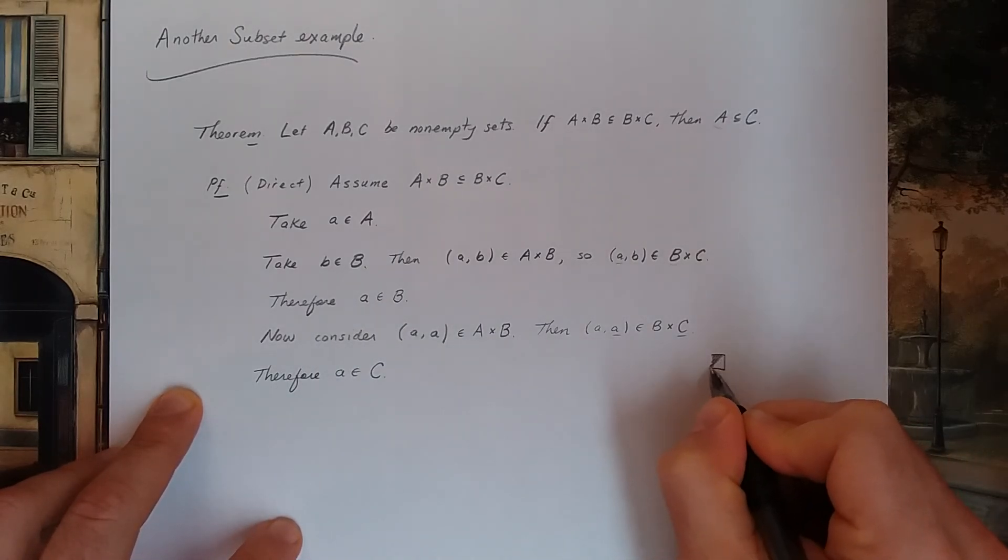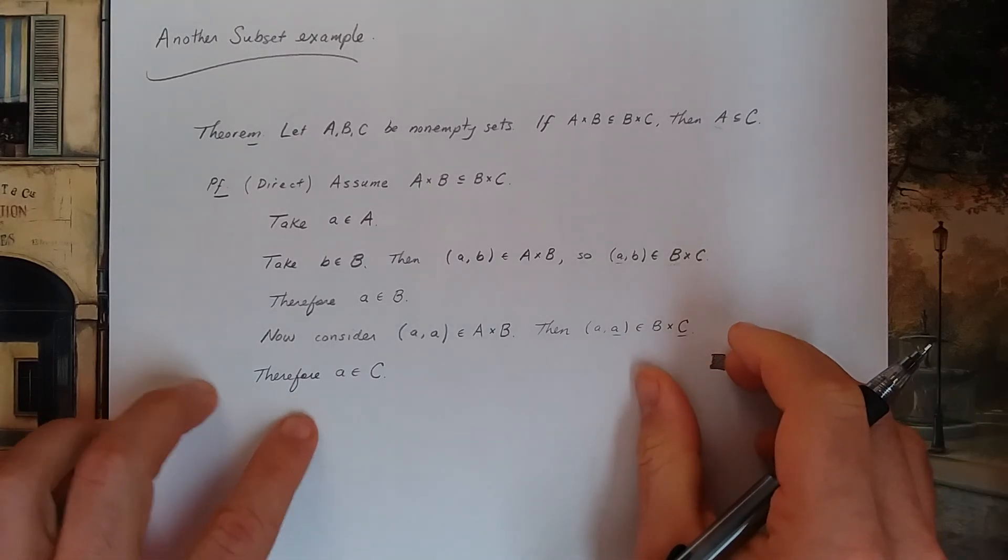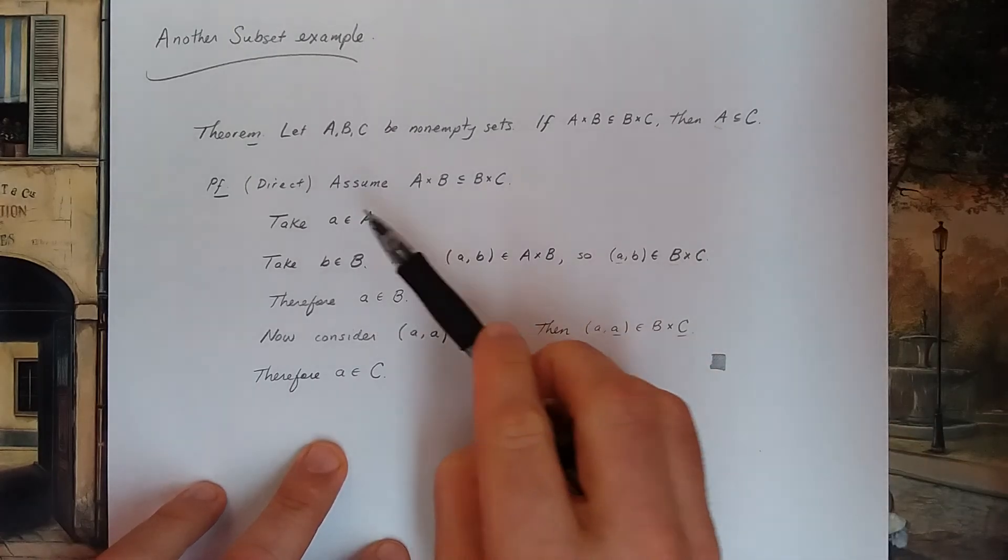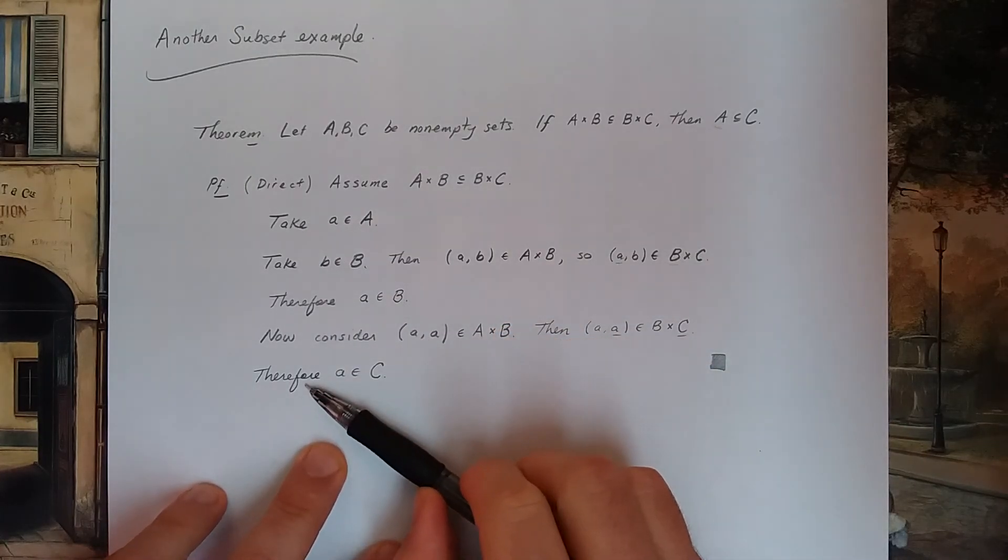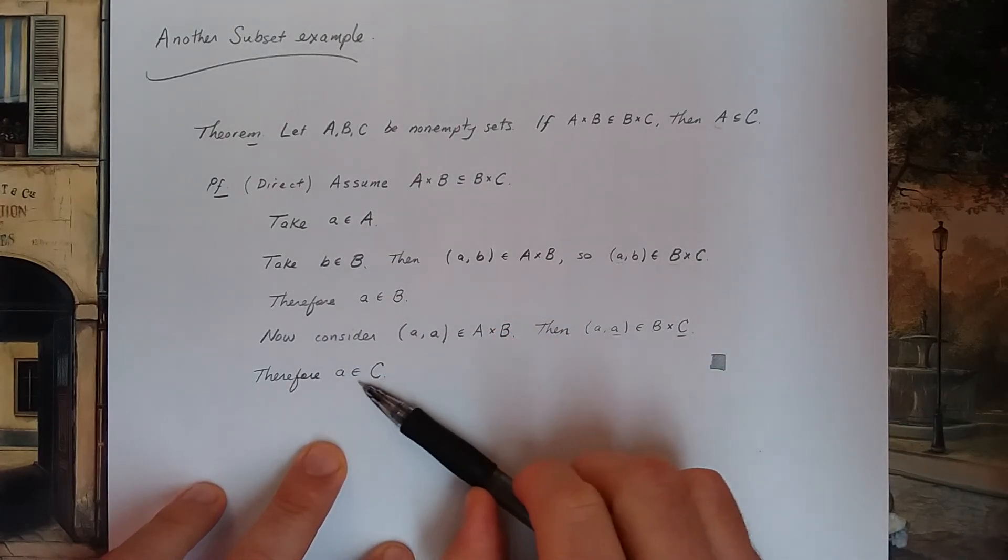So I'm going to take an element a in A. Then I'm going to do some logic and hopefully conclude that little a has to be in C as well.